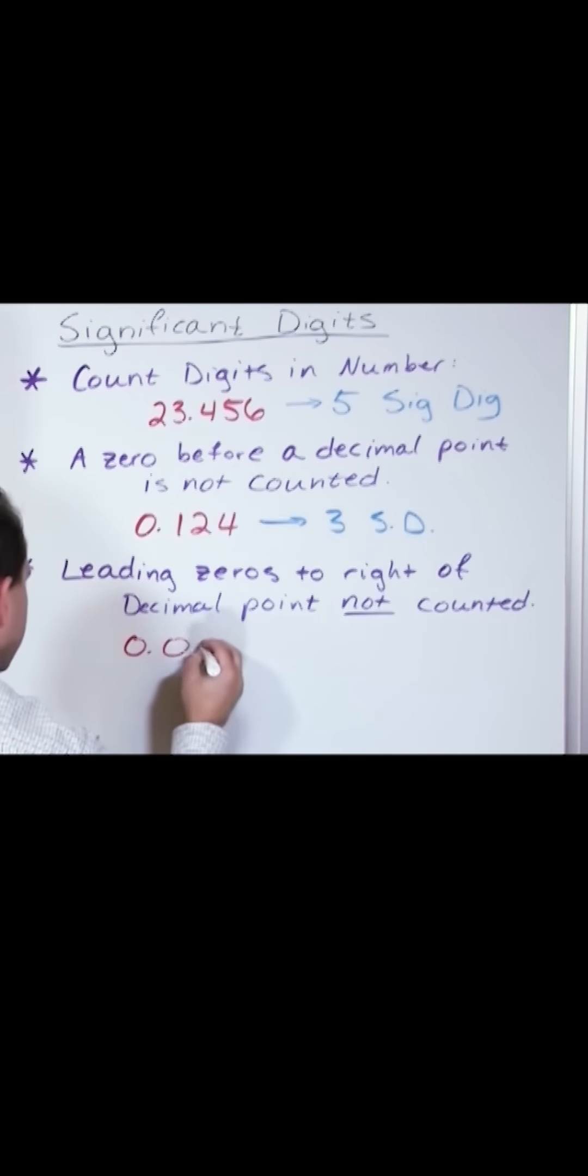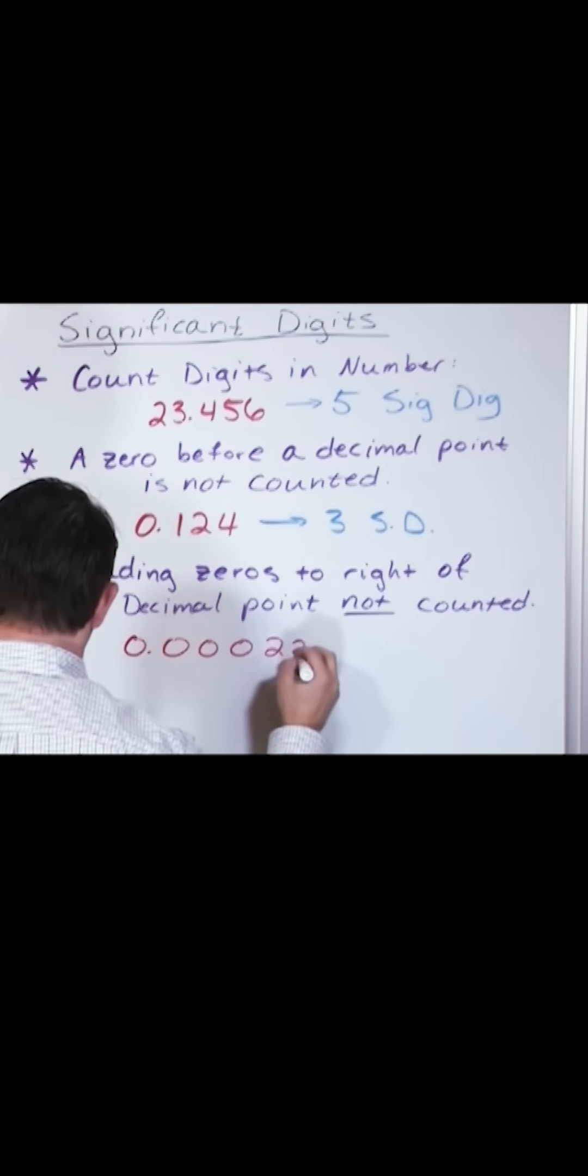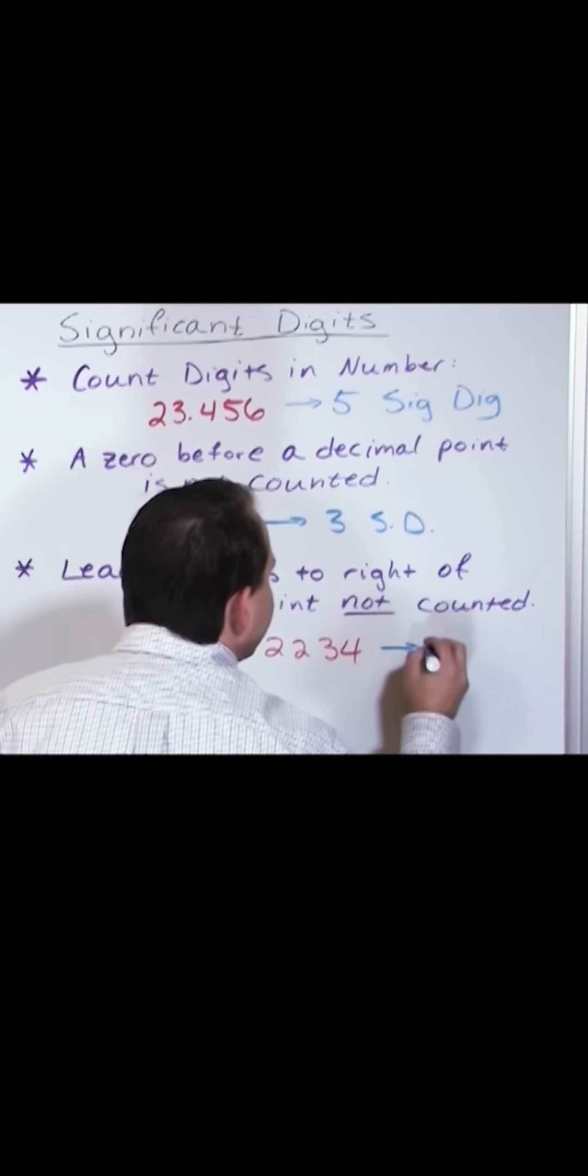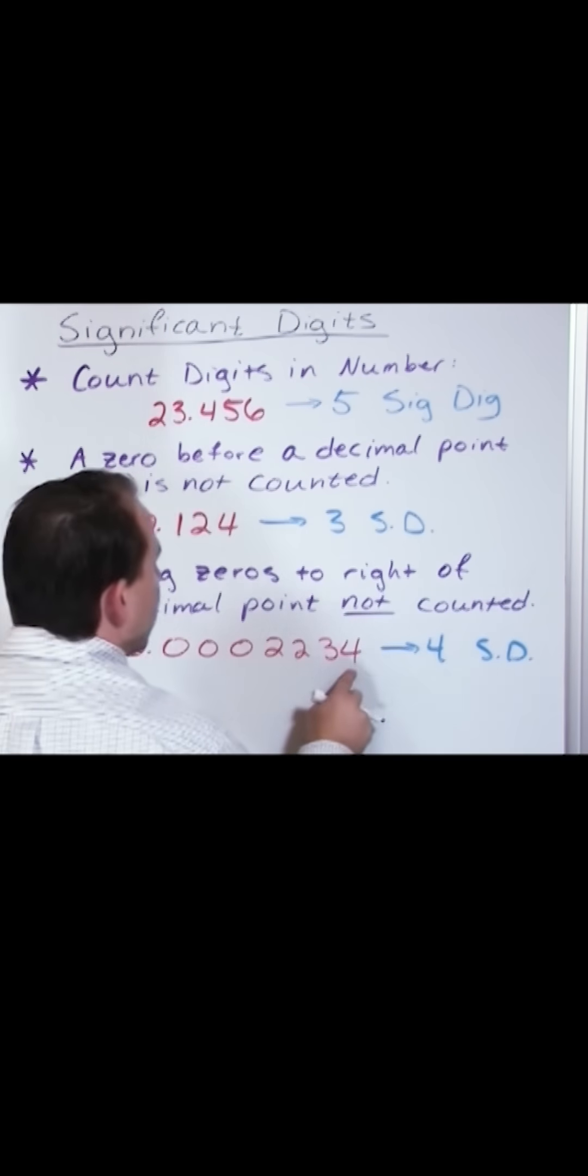What if I have 0.002234? How many significant digits is this guy? This guy has four significant digits. One, two, three, four.